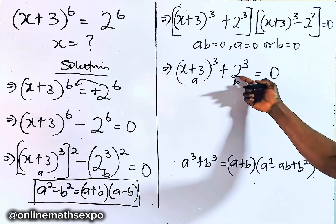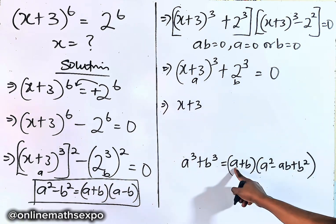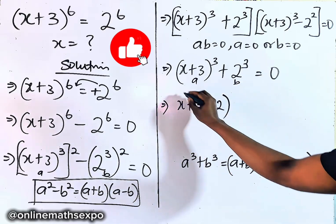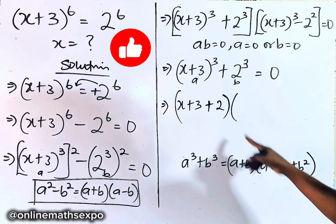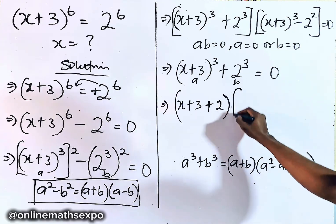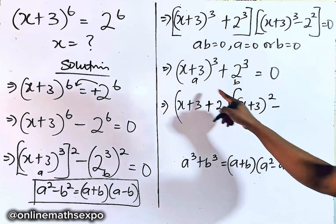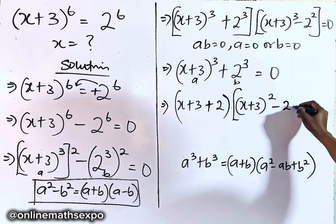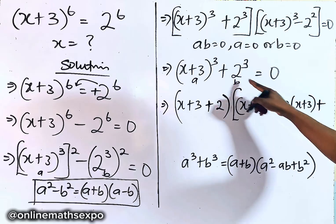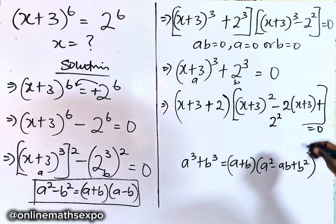Applying the sum of cubes rule, we have (x + 3 + 2) for the first part — that's (a + b). Then we multiply by a² − ab + b², which gives us (x + 3)² minus 2 times (x + 3), then our b is 2 so we square it. Everything is equal to 0.